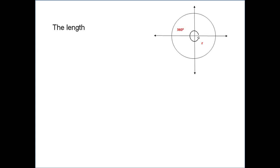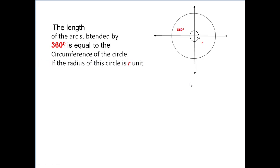Now the length of the arc formed by this total angle 360 degree will be equal to the circumference of the circle. And if the radius of the circle is r unit then the circumference is 2πr units. Therefore, from the definition of the radian we get,